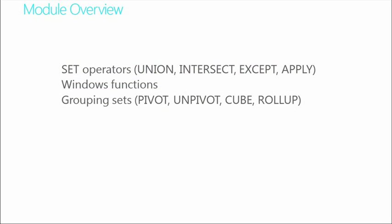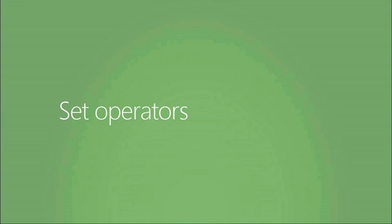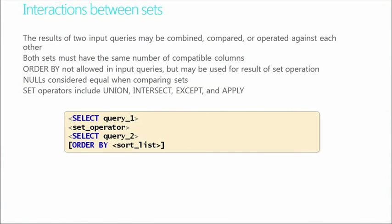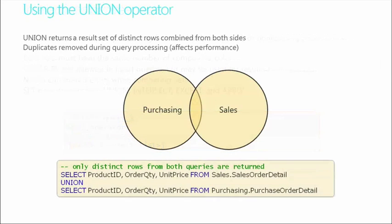So we've got some cool stuff left to discuss. Let's open up this section with set operators. It's an interaction between sets — the results of two input queries that can be either combined, operated against, or even compared. Both of them have to have compatible columns, the same number of columns. You can't use the order by clause within there when you're looking at these input queries. Nulls are considered equal when comparing sets. And some of these set operations include unions, intersect, except, and apply.